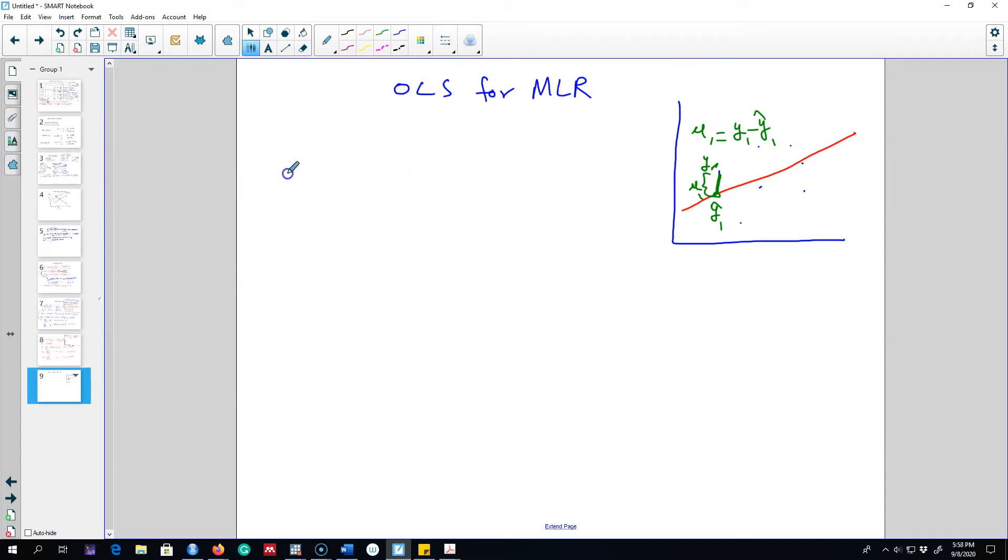Okay, so remember in the previous video for the simple case, I talked about minimizing these sum of squared errors. We minimize u_i squared. That is, we minimize ith value from the predicted values. So nothing is different here. We are doing the same thing, except that our model now looks something like this. So we are doing the same thing.